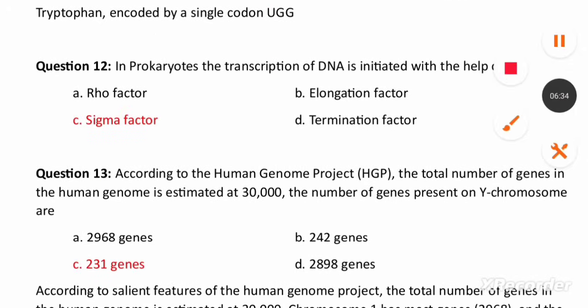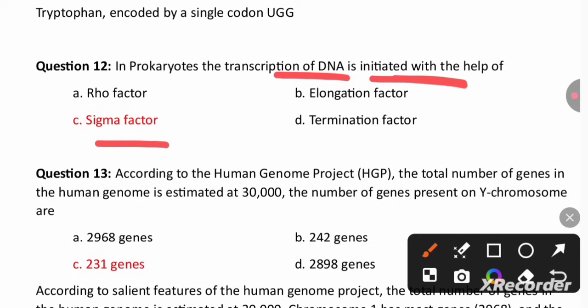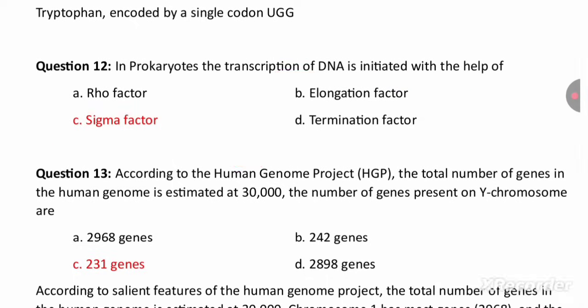In prokaryotes, transcription of DNA is initiated at the promoter region when the sigma factor binds to the enzyme RNA polymerase. When the sigma factor binds to RNA polymerase at the initiator site, transcription begins.